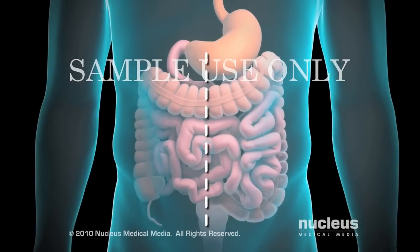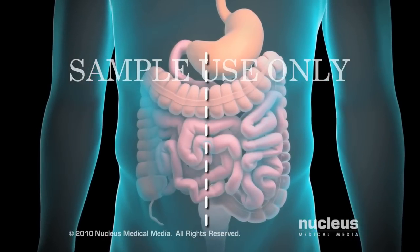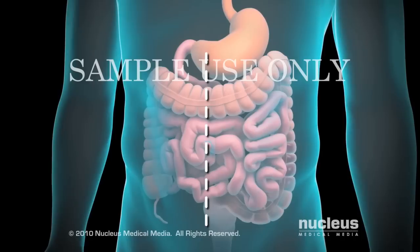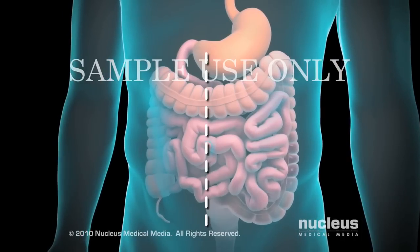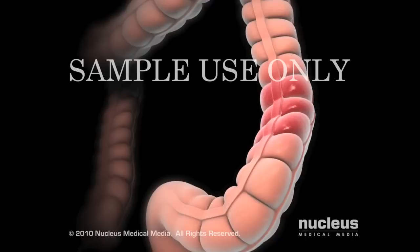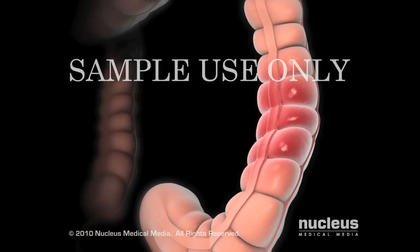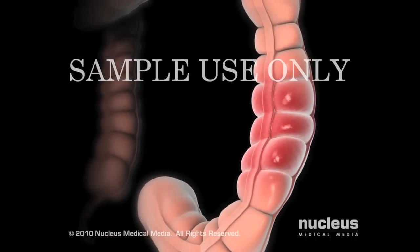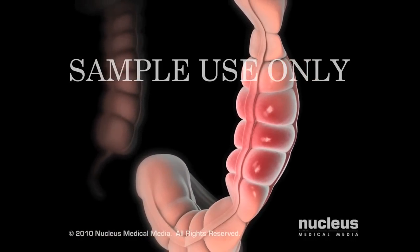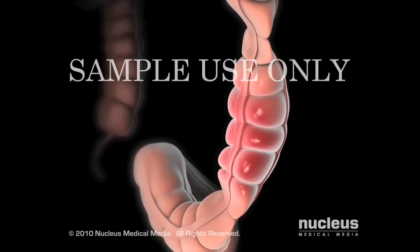Your surgeon will begin by making an incision in your abdomen over the part of the colon that needs to be removed. Your surgeon will clamp your colon in two places, on each side of the section to be removed.